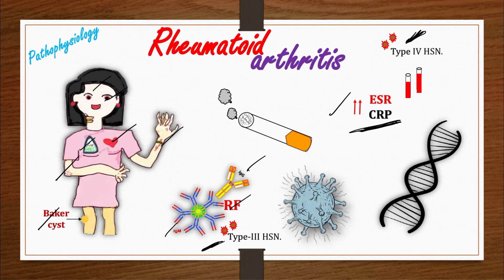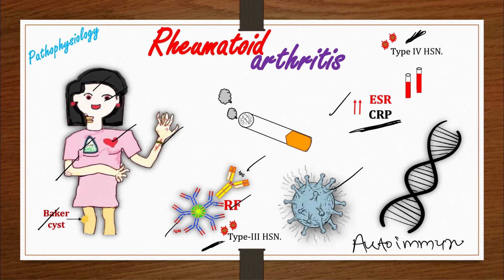In rheumatoid arthritis there is chronic inflammatory disease. The chronic inflammation can be caused by infection, an autoimmune reaction, or inflammatory processes to sterile agents like exposure to silica. Rheumatoid arthritis is an autoimmune inflammatory reaction. Since it is chronic, the patient will have monocytes, macrophages, lymphocytes, plasma cells, and fibroblasts — not neutrophils, as those are generally seen in acute inflammation.